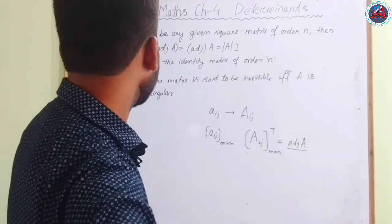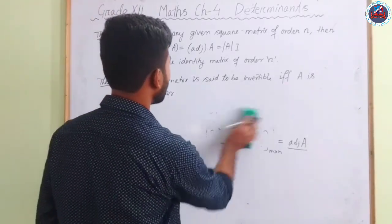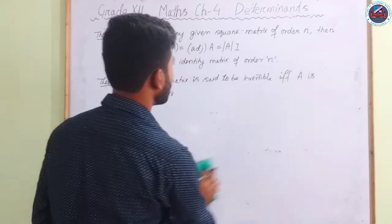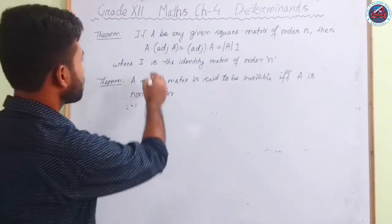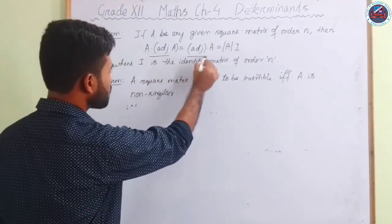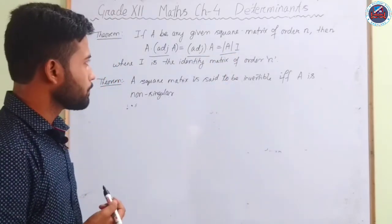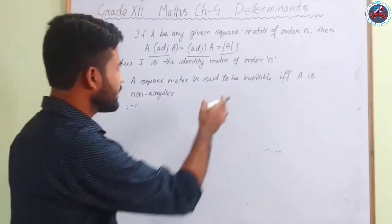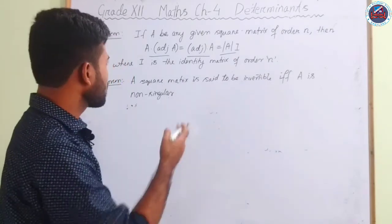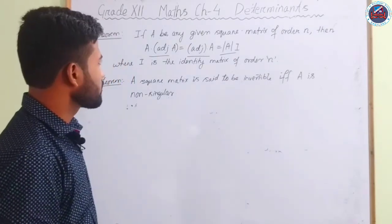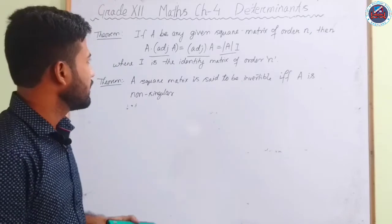We have a theorem: if A is any given square matrix of order n, then A × adj(A) = adj(A) × A = |A| × I, where |A| is the determinant of A and I is the identity matrix. This is a very important result that we shall be using. The proof is skipped here.